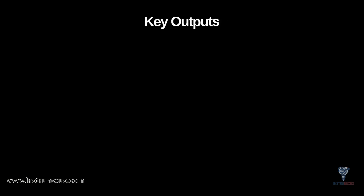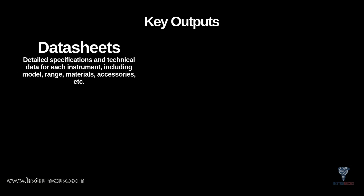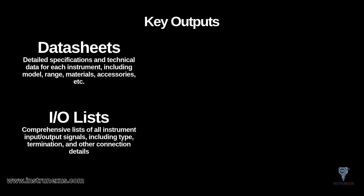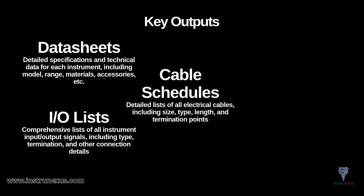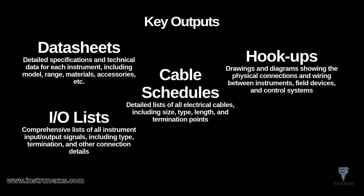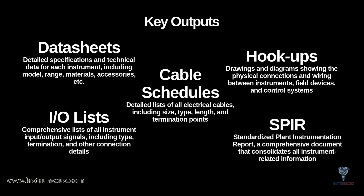Once the Instrument Index is populated, it becomes the engine that generates all your other key outputs. From the index, you will create the Instrument Data Sheets — the detailed technical specifications for each device, including its model, range, materials, and accessories. You'll generate your I/O lists, which are comprehensive lists of all the input and output signals including their type and connection details. The index is also the source for cable schedules, which detail cable sizes, types, and lengths, and hookup drawings showing the physical wiring and connection details. It can even be used to generate SPIR, or Standardized Plant Instrumentation Report.